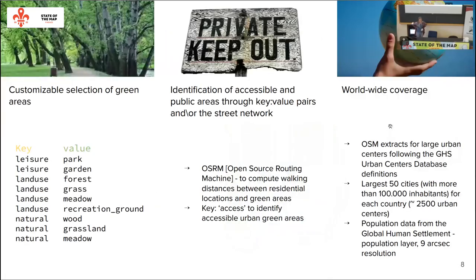We think this advantage exists. First of all, OpenStreetMap allows us, when looking at the selection of green areas we are interested in, to make a very customizable selection. It also allows us to understand whether an area is actually accessible or not — we have all the tags related to whether the area is private or public — and we can compute walking distances using the street network in OpenStreetMap.